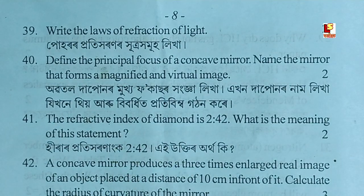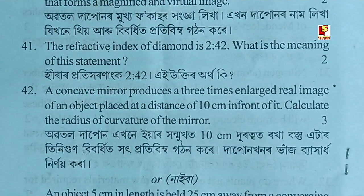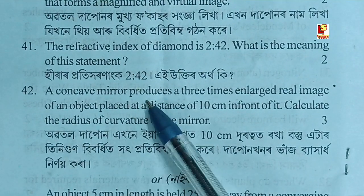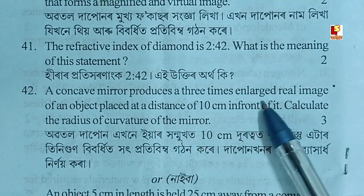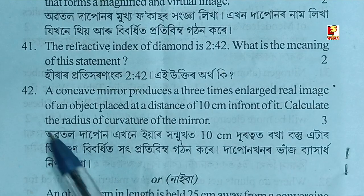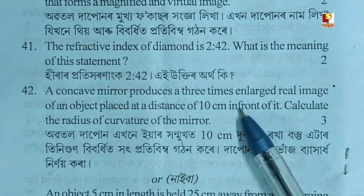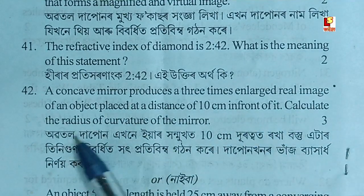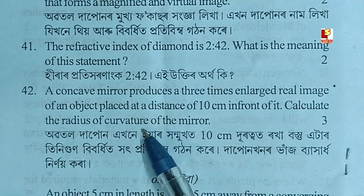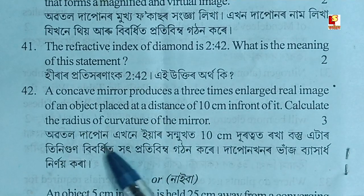A concave mirror produces a three times enlarged real image of an object placed at a distance of 10 cm in front of it. Calculate the radius of curvature of the mirror.